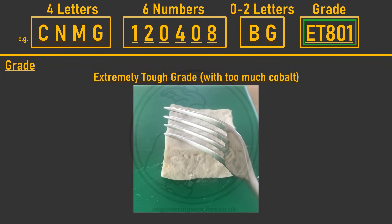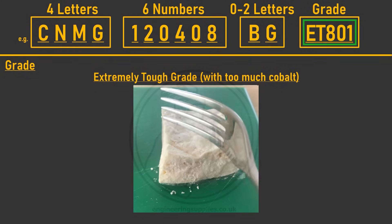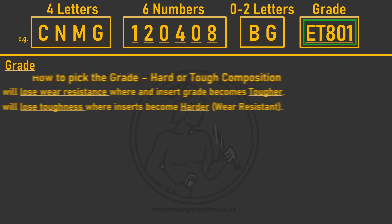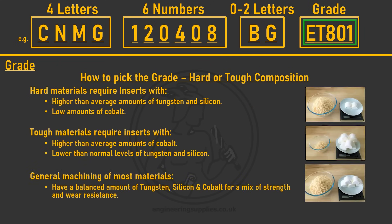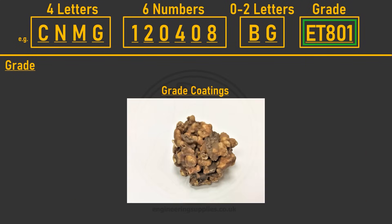Adding cobalt acts like a spongy glue, making the insert tougher and better suited to heavy cuts and tough materials like stainless steels or heat resistant alloys. However, tougher inserts wear away faster. Machining hard materials requires high tungsten and silicon with low cobalt; tough materials require high cobalt with lower tungsten and silicon; and somewhere in between is a balanced mix that can machine most materials.